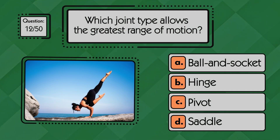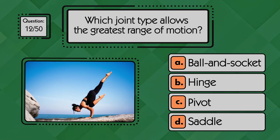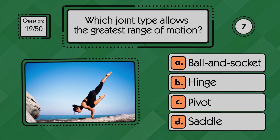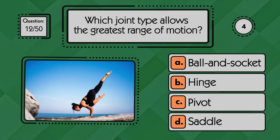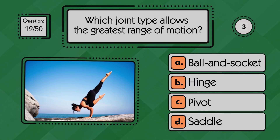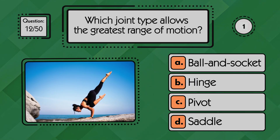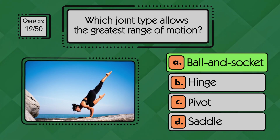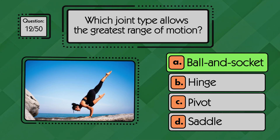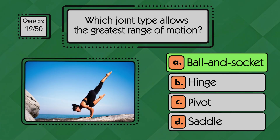Which joint type allows the greatest range of motion? Ball and socket joints allow the greatest range of motion in the body, found in the shoulder and hip.